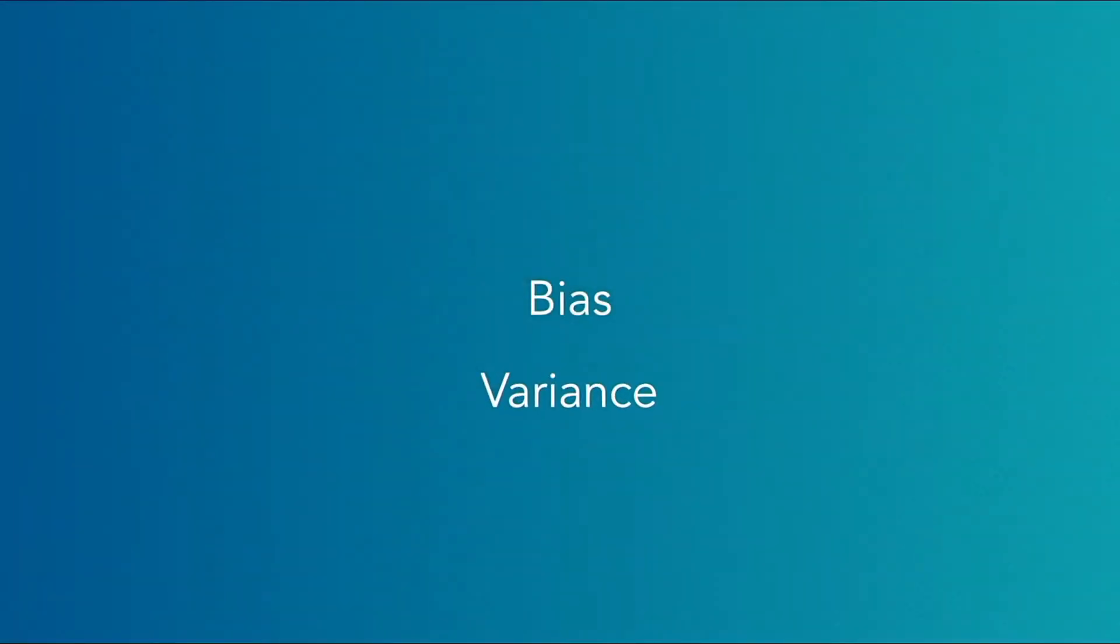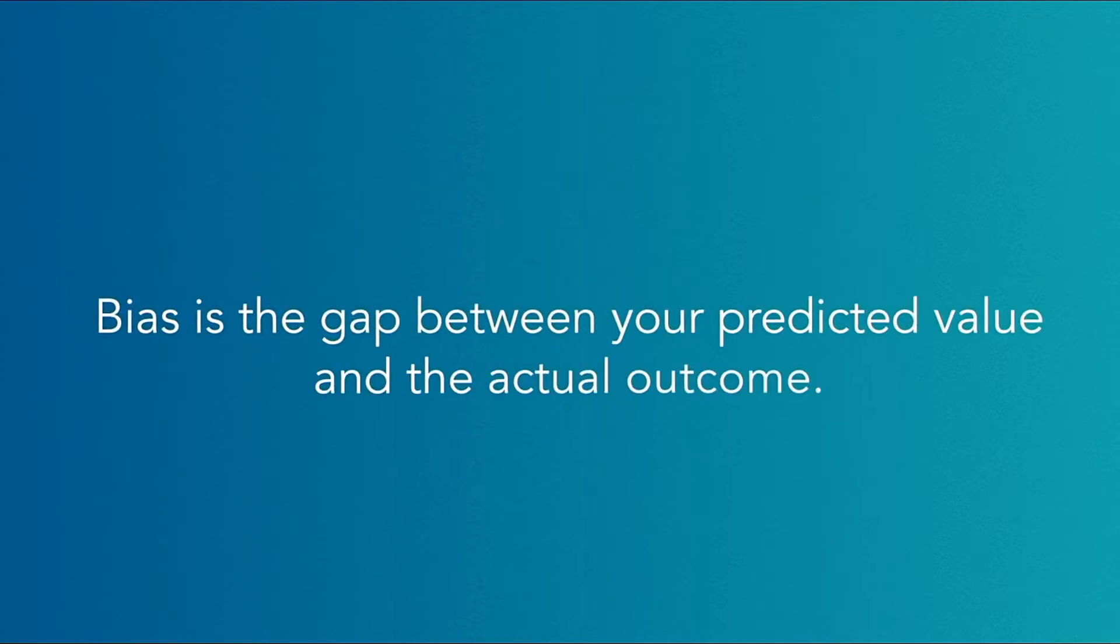One of the biggest challenges in machine learning is figuring out if your data model has a bias or a variance. Bias and variance are related but they're two separate challenges.